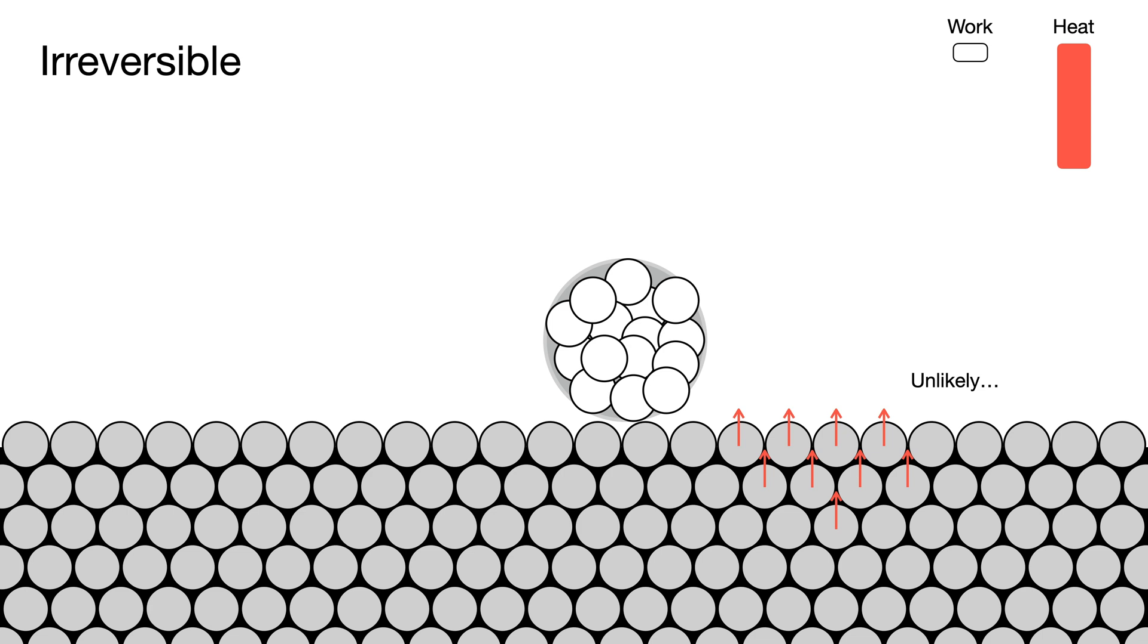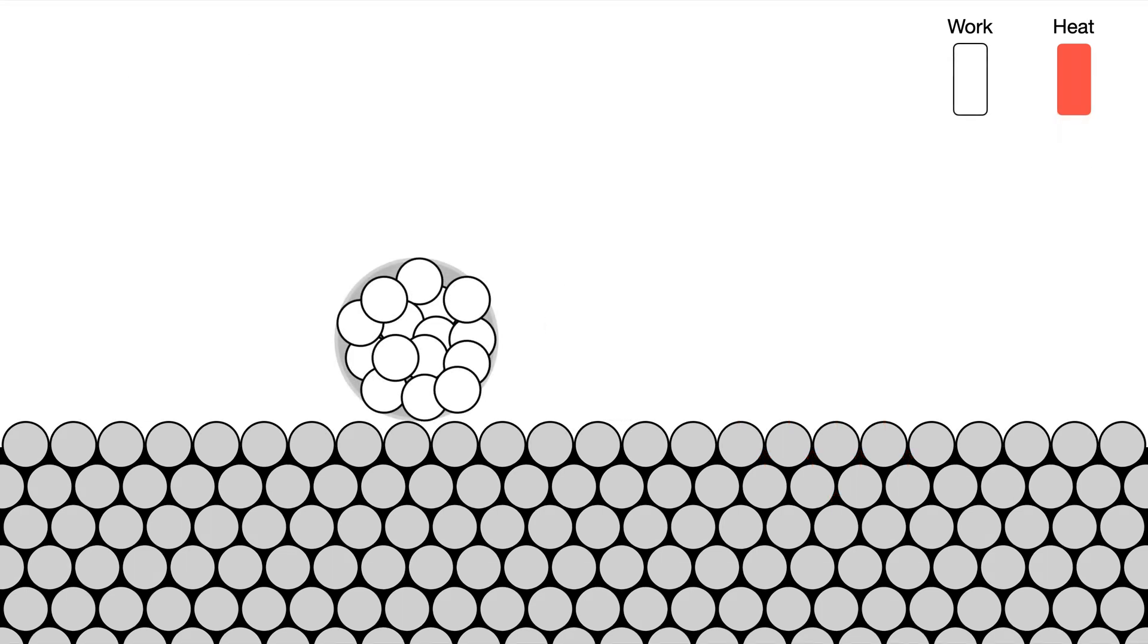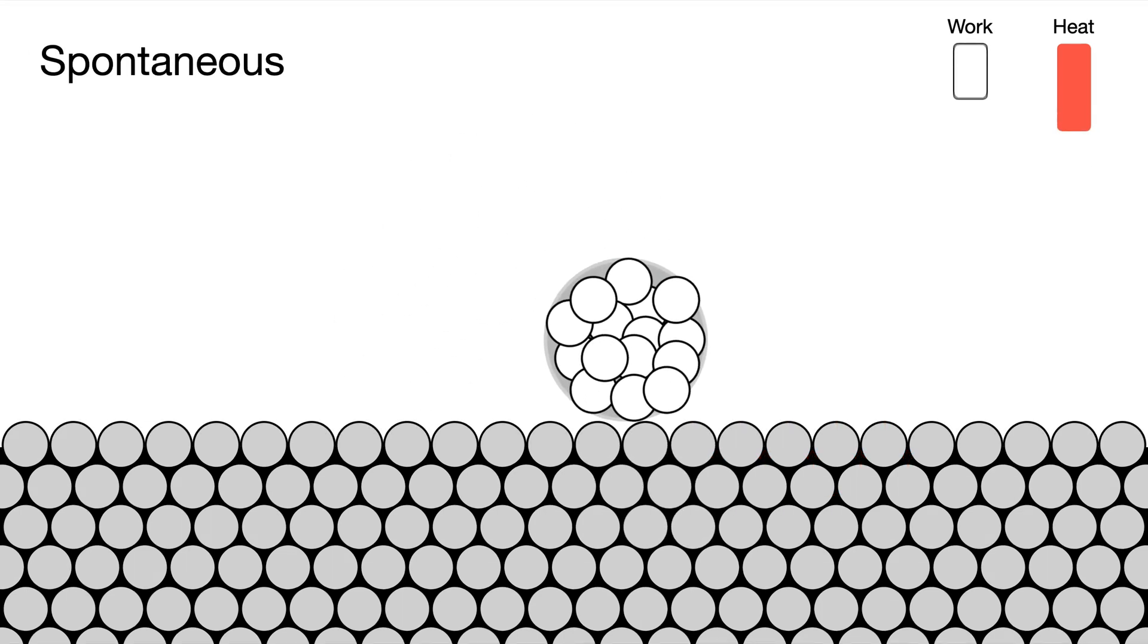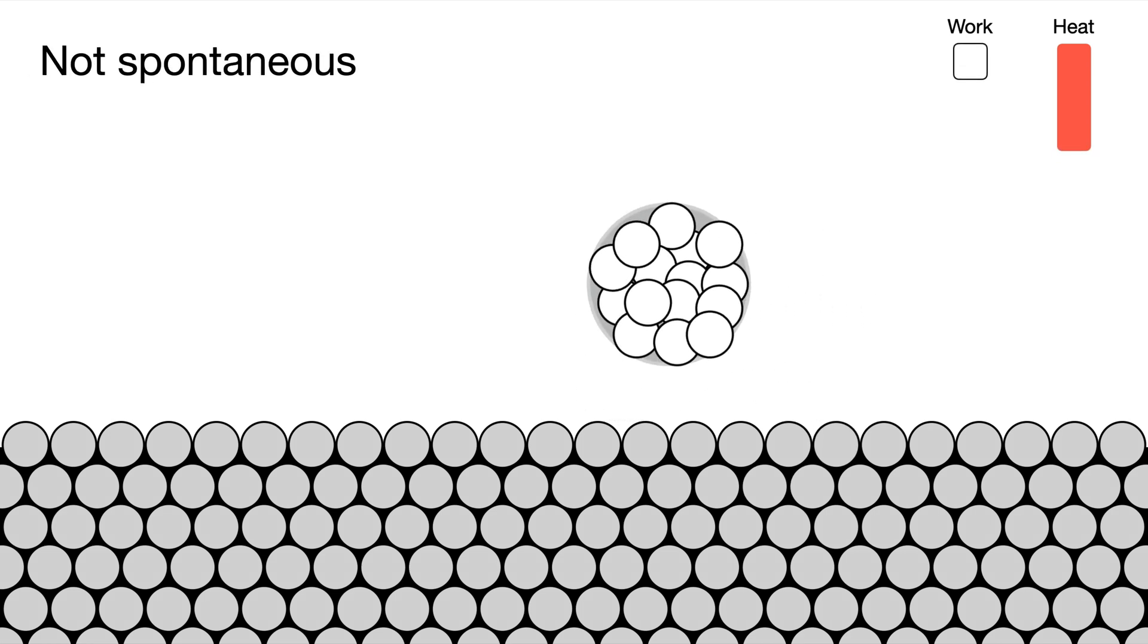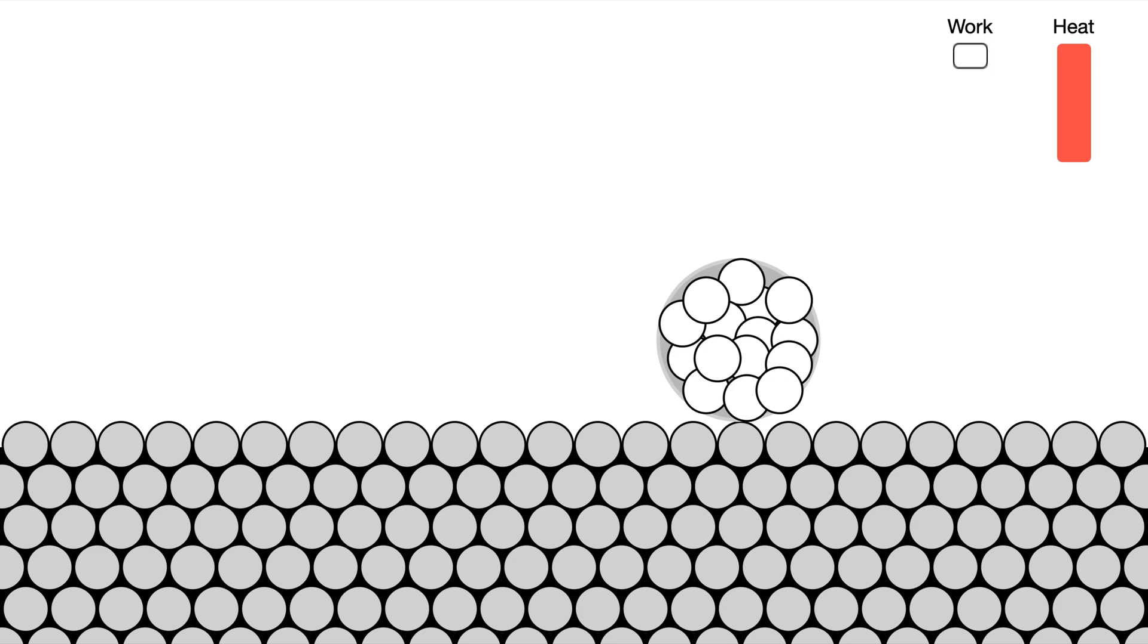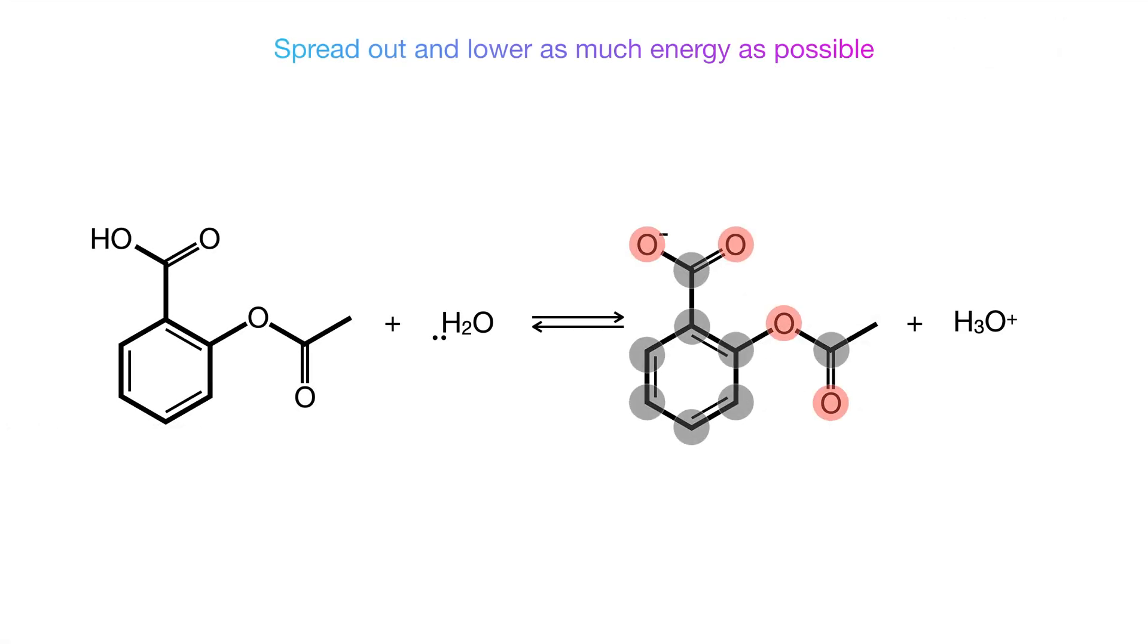So to conclude, the ball would spontaneously convert its energy into random motion, but it would not spontaneously convert its energy into orderly motion. This is in fact only one of the phases of this trend. Chemical reactions prefer to have things take on as many forms and spread out as much as possible.